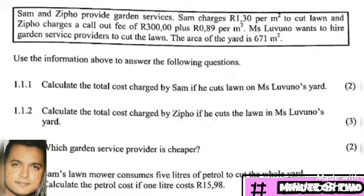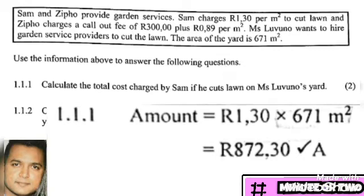Question 1.1.1 says: calculate the total cost charged by Sam if he cuts the lawn on Miss Livuno's yard. We know the area of the yard and we know how much Sam charges per square meter. So we take R1.30 and multiply by the area of the yard which is 671. Multiplying that through, we get an answer of R872.30.